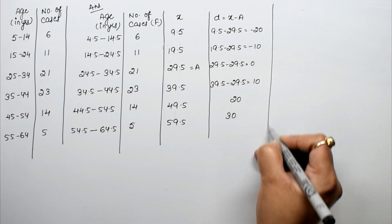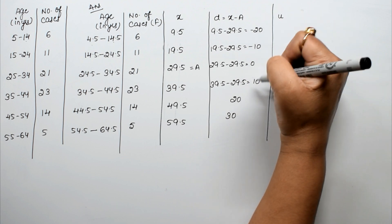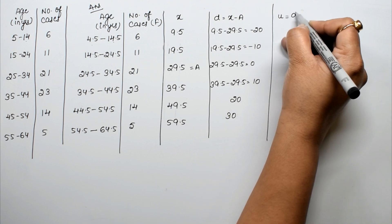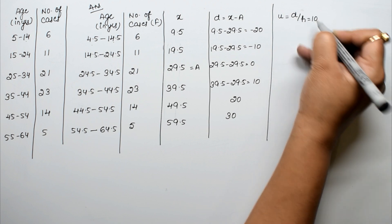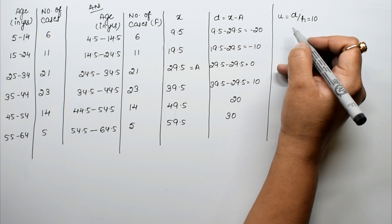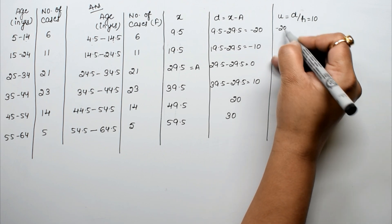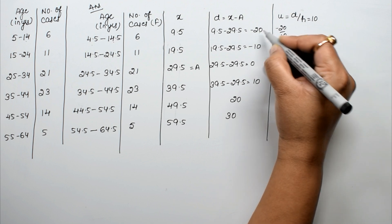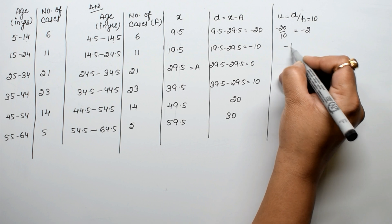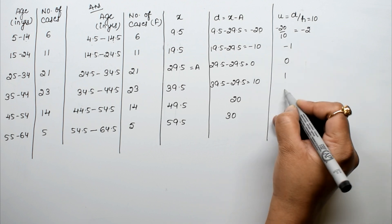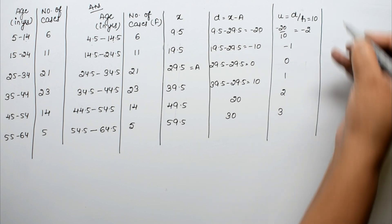We divide d by h = 10 to get u = d/h. So the u values are: −20/10 = −2, −10/10 = −1, 0/10 = 0, 10/10 = 1, 20/10 = 2, and 30/10 = 3.